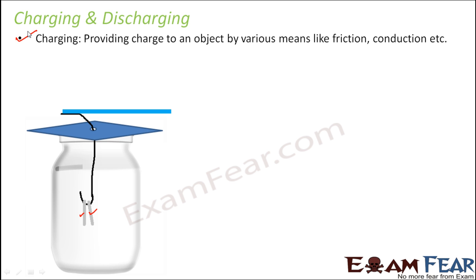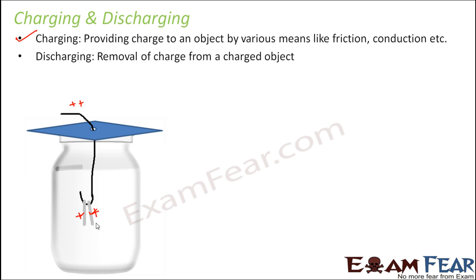What is discharging? Right now these aluminum foils have some additional charge. If the material is positively charged, then these foils are also having positive charge. Discharging is the process in which we take away this extra positive charge from the aluminum foil strips — it is the removal of charge from a charged object.